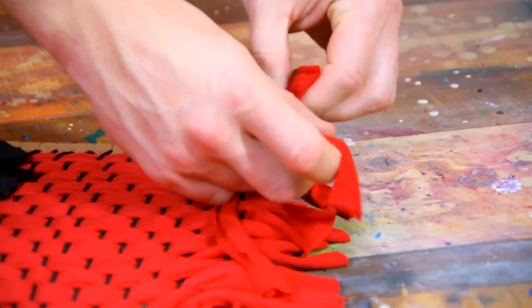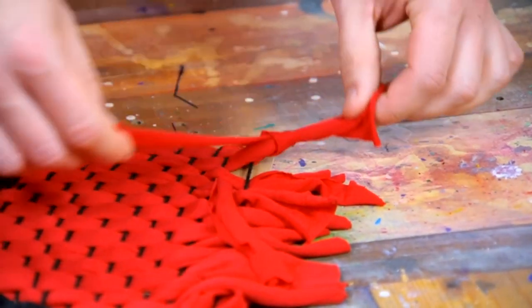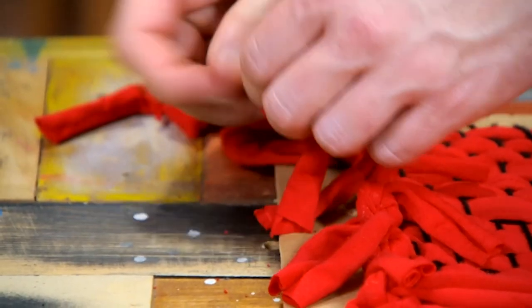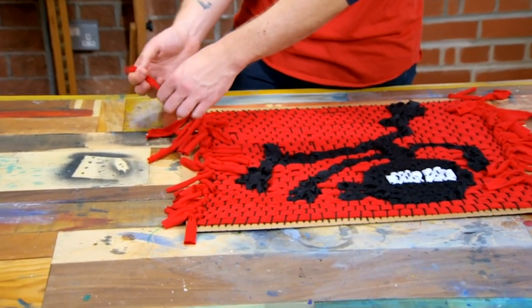I'm going to start tying off the red ends, literally tying the one with the one next to it. I'm going to double knot them so they're nice and secure. Do that all the way down both sides.